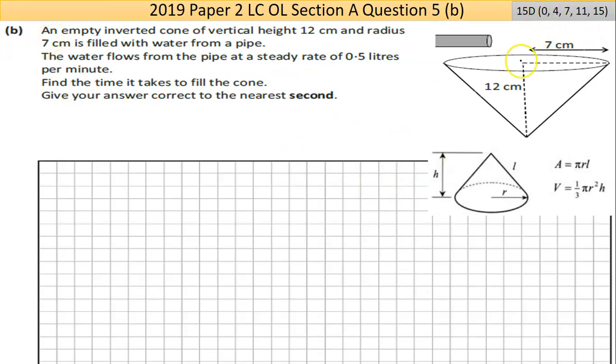Now part B here has 15 marks, so this is tricky as well. I have the formulas for this screen-grabbed here. This is an empty inverted cone of vertical height 12 centimeters—that's the height there—and radius 7 centimeters, filled with water from a pipe. Now, if you want, you could use this area formula and find the slant L using Pythagoras, but that's not going to help us here. The water flows from the pipe at a steady rate of 0.5 liters per minute. Find the time it takes to fill the cone. Give your answer to the nearest second, so they want the answer in seconds.